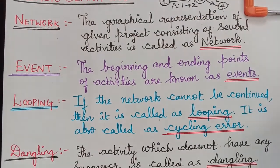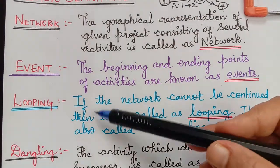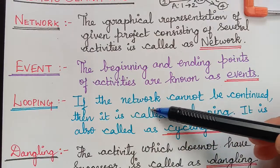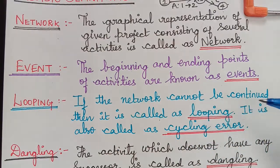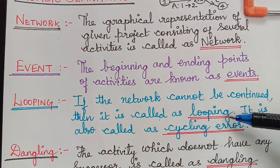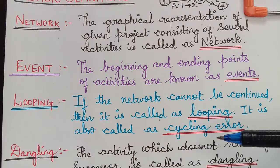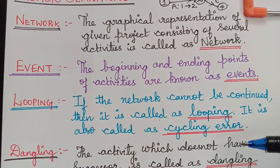Here we have the definition of looping. If the network cannot be continued, then it is called looping. It is also called a cycling error.